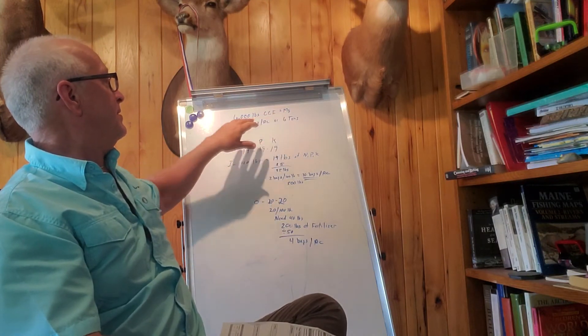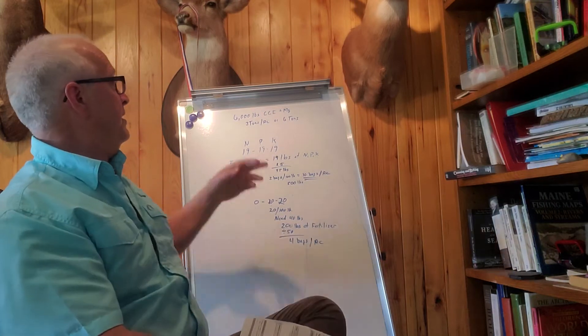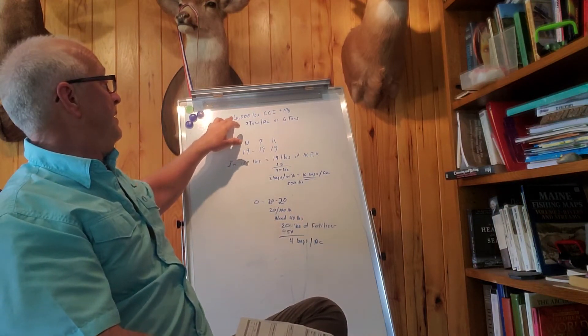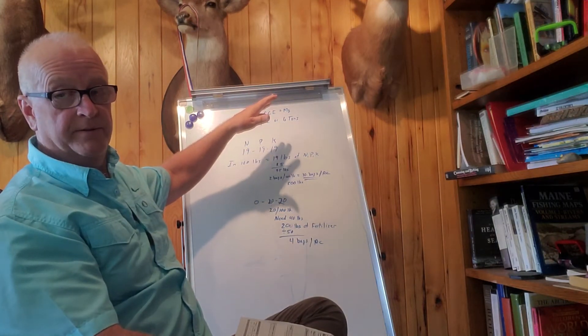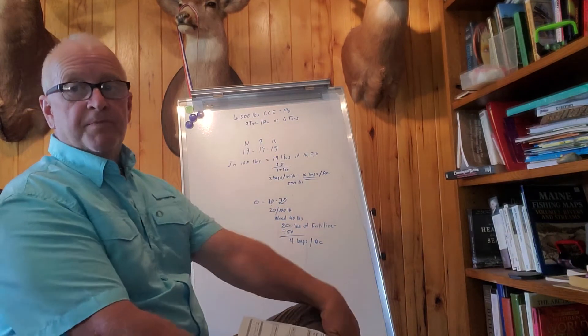If my lime is an 80% CCE, then you would divide 0.8 into that and you would end up with a little more than 6,000 pounds. But the lime that I use is pretty pure.